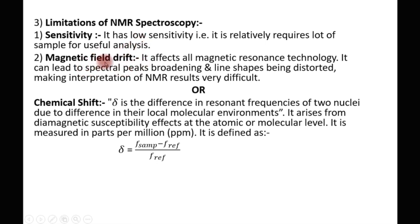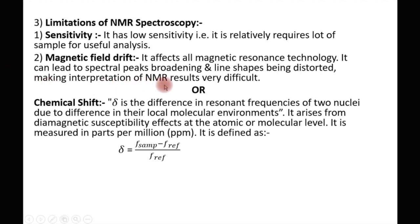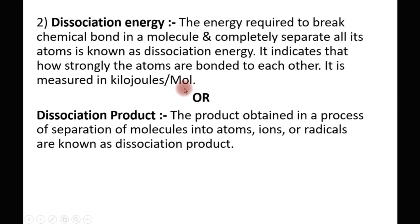The next limitation of NMR spectroscopy is magnetic field drift. Due to magnetic field drift, this can lead to spectral peak broadening and distortion of the line shape. As a result of this drawback, we are not able to interpret NMR results very easily or precisely. So this magnetic field drift makes the interpretation of NMR results very difficult. These are the two key limitations of NMR spectroscopy.